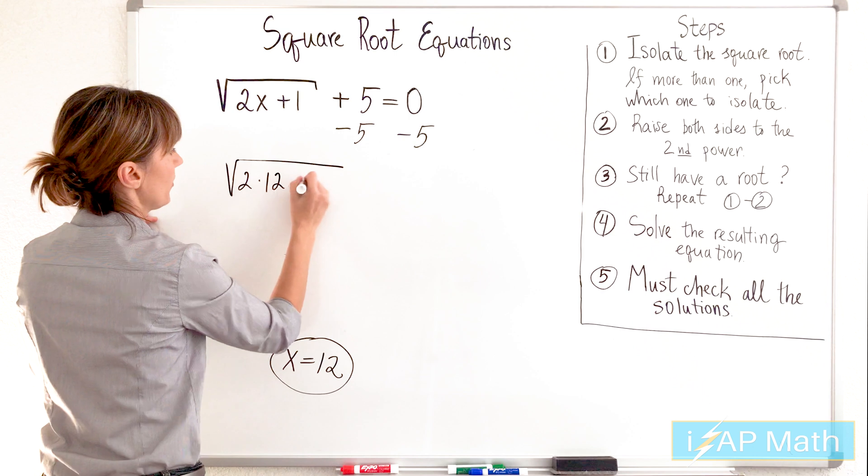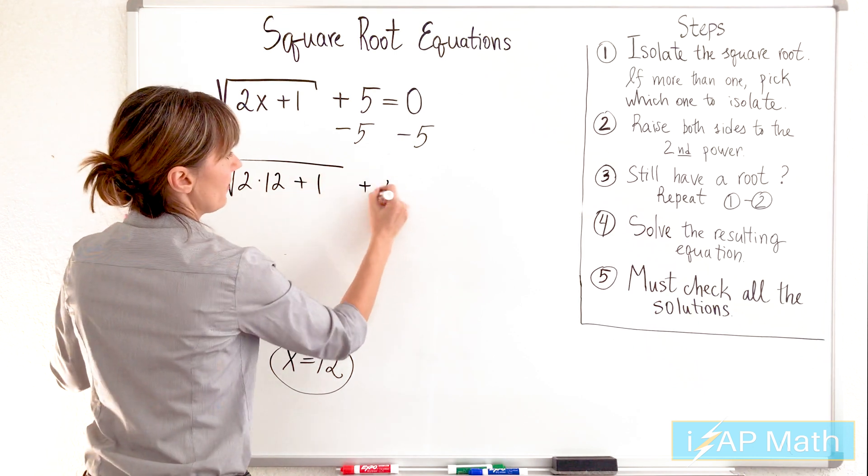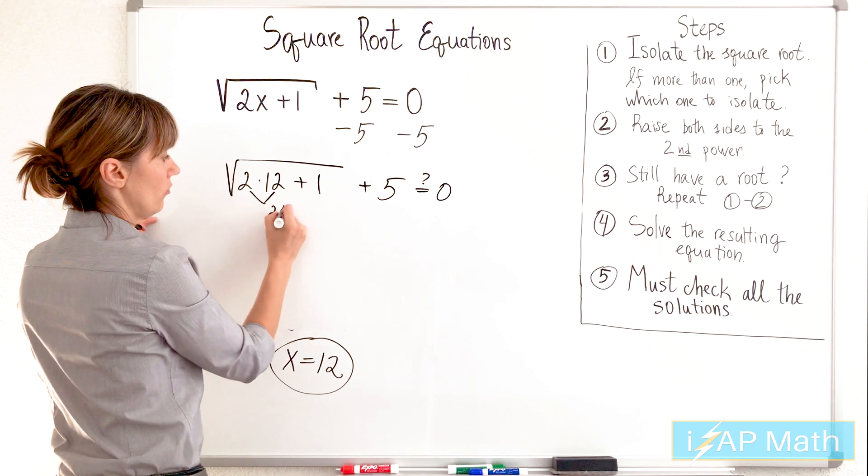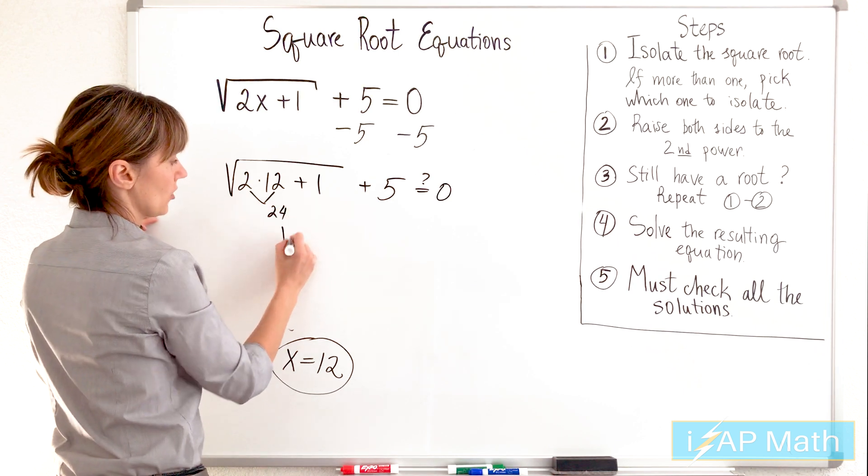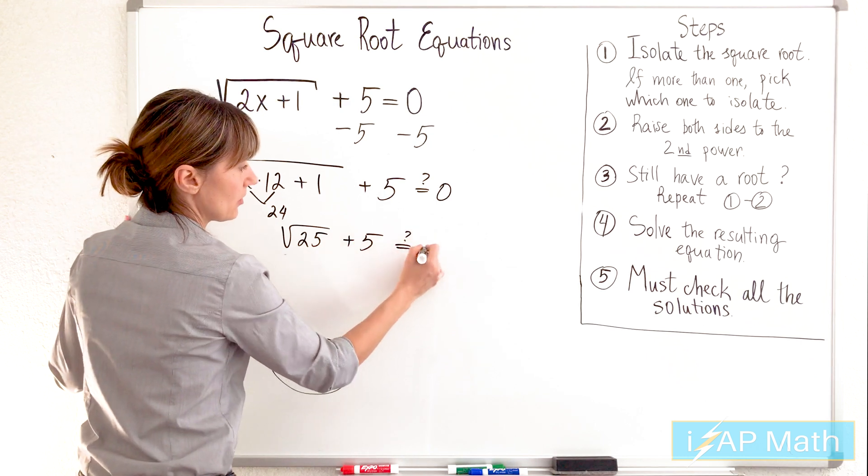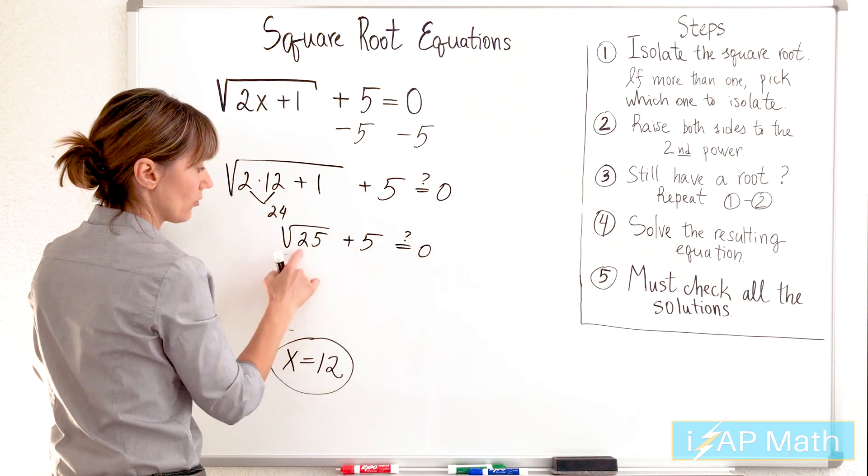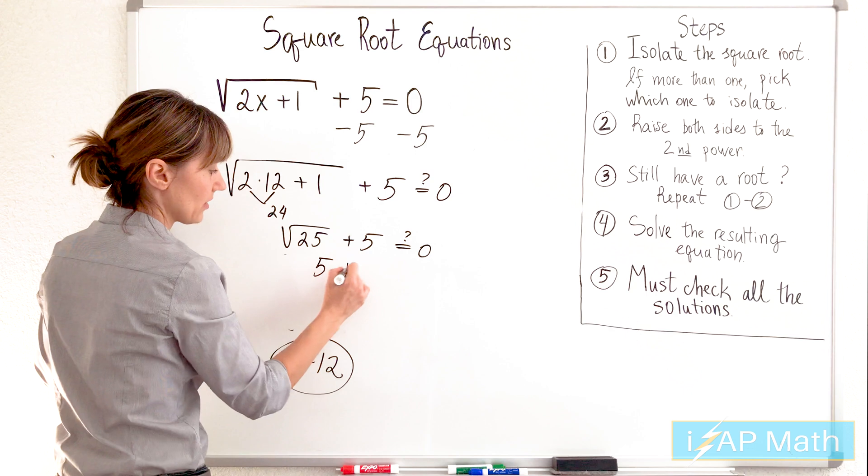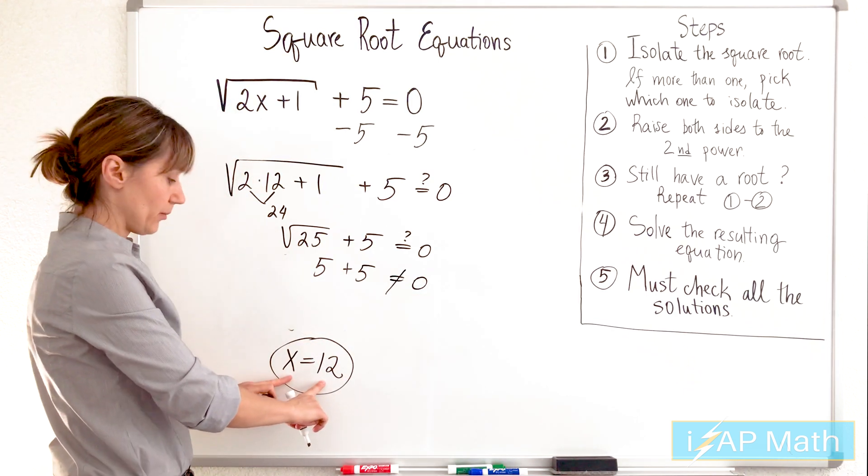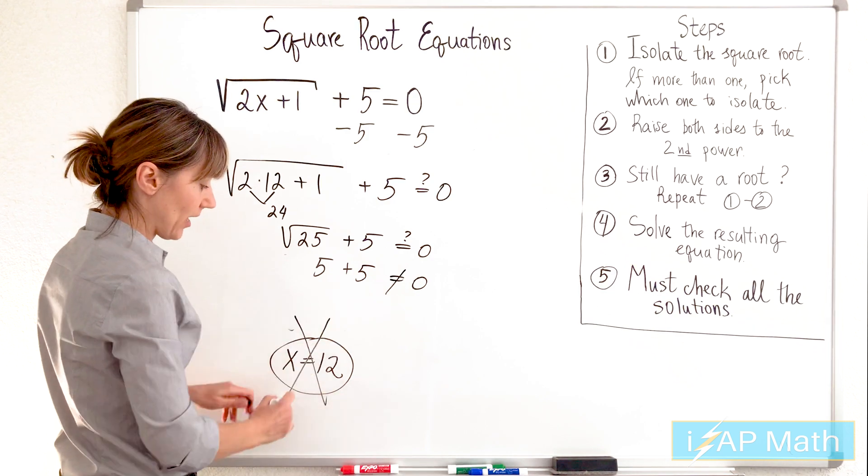What do we have? 2 times 12 plus 1 plus 5, is it 0? This is 24. 24 plus 1. Square root of 25 plus 5, is it 0? Doesn't look so. Square root of 25 is 5. 5 plus 5 is definitely not 0. So this possible solution does not check out.